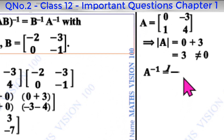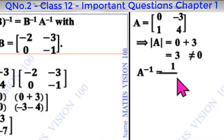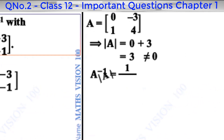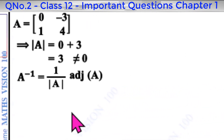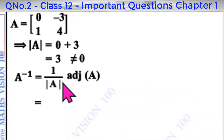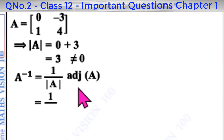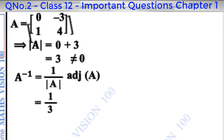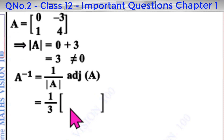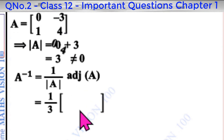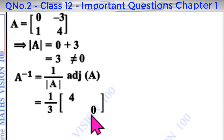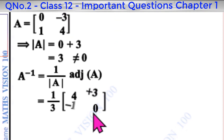A inverse equals 1 by determinant of A, which is 1 by 3, into adjoint of A. For a 2x2 matrix adjoint, we swap the principal diagonal elements and change the sign of the other diagonal elements — 1 becomes minus 1 and minus 3 becomes plus 3.